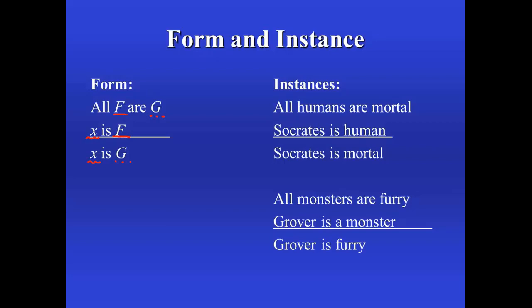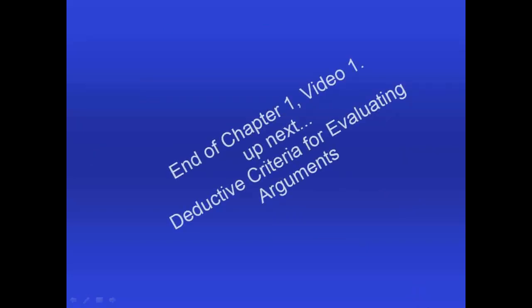So if we can find a systematic and rigorous way to express that form, then we can get a better handle on the logical properties we're interested in. And in fact, that's one of the main reasons why we develop a symbolic language. The symbolic language will allow us to express form extremely clearly, and it will allow us to develop systematic ways to work with those forms and test them for the properties we're interested in. So form and instance are going to be of utmost importance as we go through the term. This ends Chapter 1, Video 1. In the next video we'll be discussing Deductive Criteria for Evaluating Arguments.